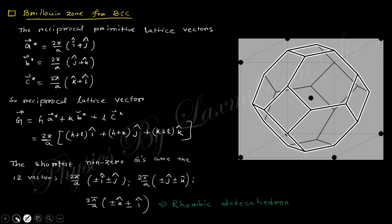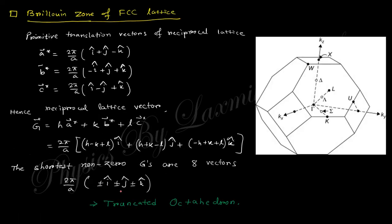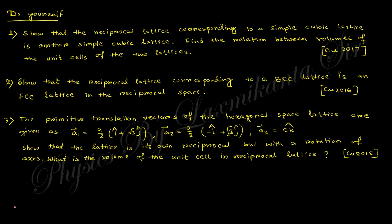In summary: the Brillouin zones are — simple square lattice (2D), simple cubic giving a cube, body-centered cubic giving a rhombic dodecahedron, and face-centered cubic giving a truncated octahedron. These are the Brillouin zones for common lattice types. Please try to solve the practice questions provided and write your answers in the comment box. If you have any doubts, comment and I will provide solutions in an upcoming video.